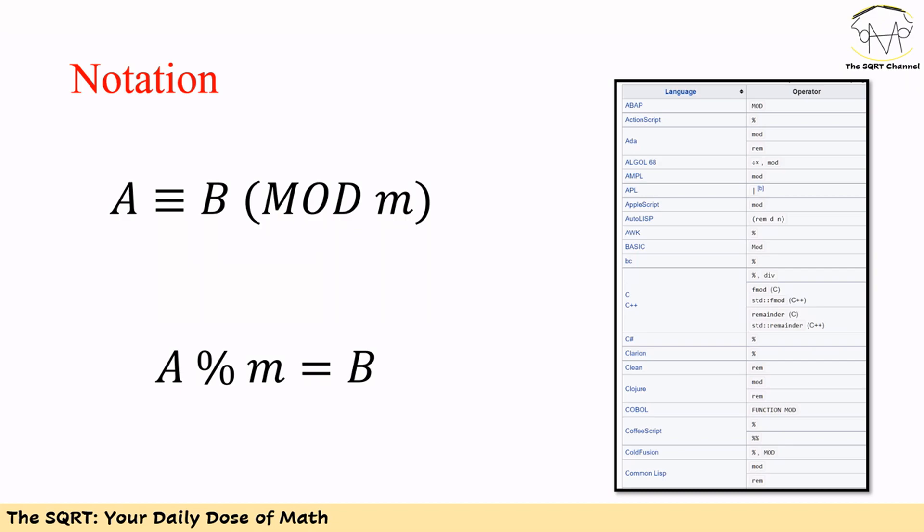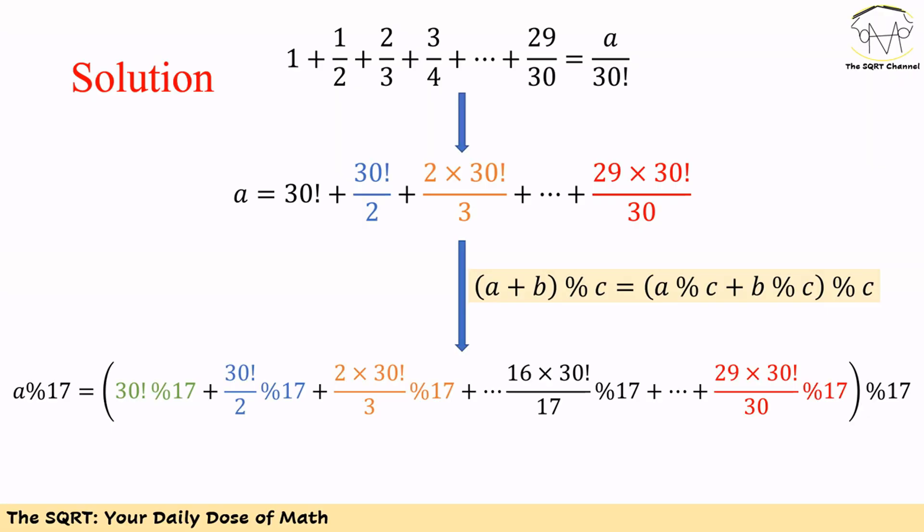Before talking about the solution, let's use a simple notation for mod M. If a and B are equivalent in mod M, we use a % M equal to B. The symbol % is a common symbol for remainder in many programming languages, and we are using this to simplify our notation.